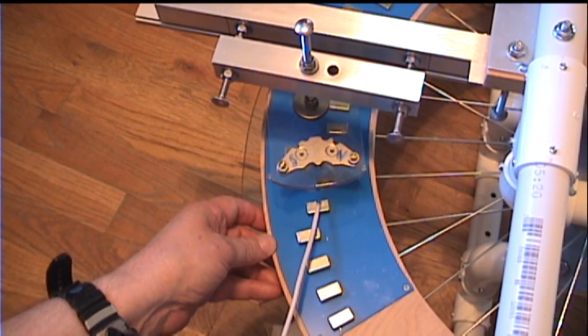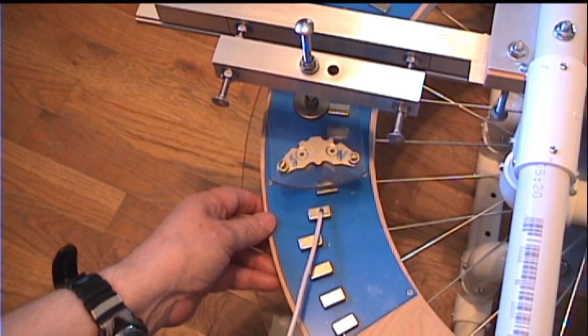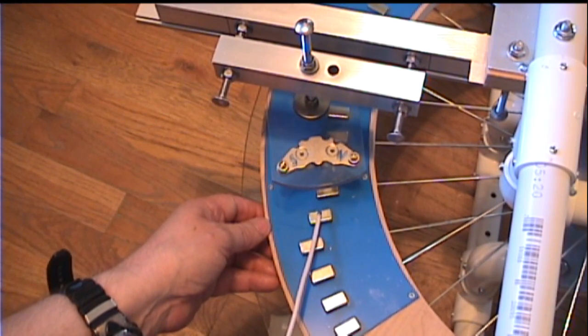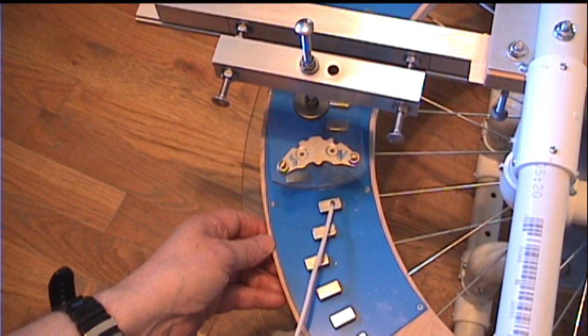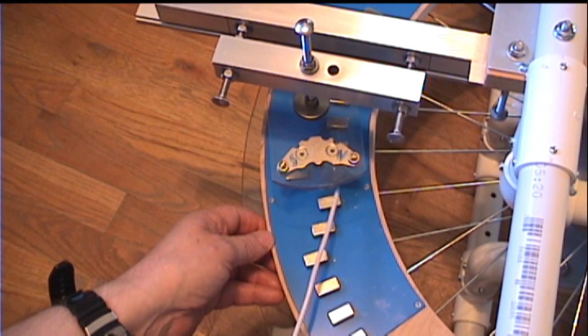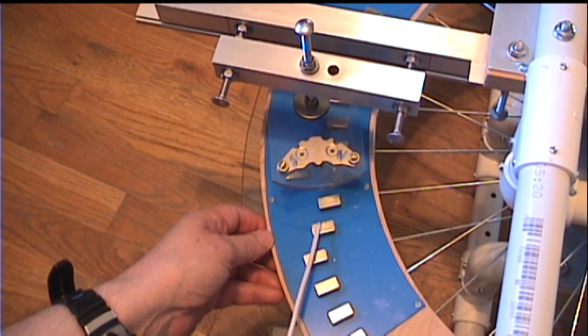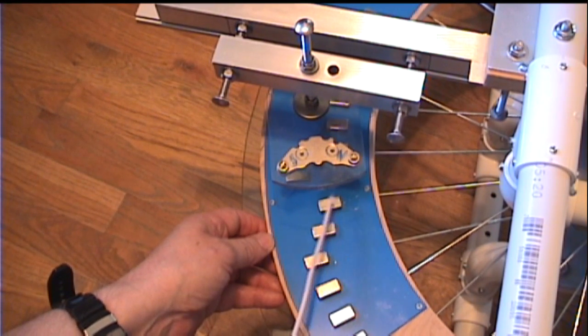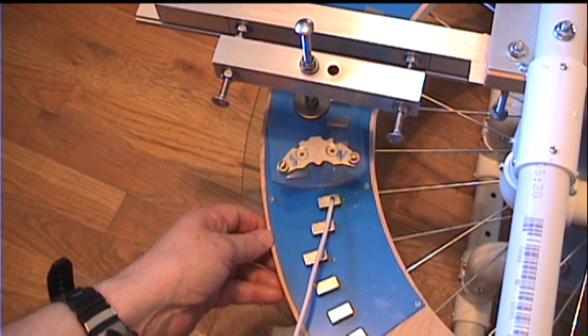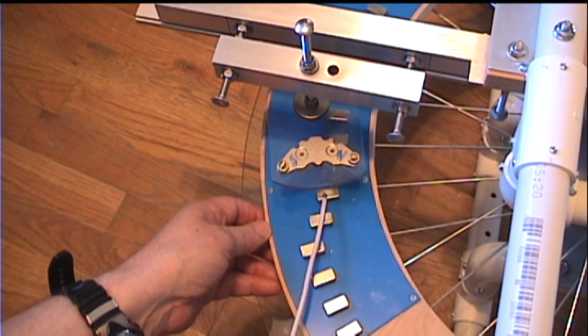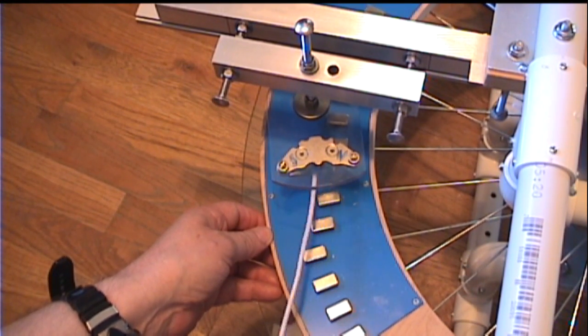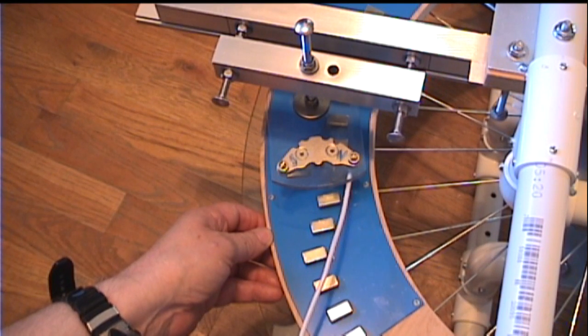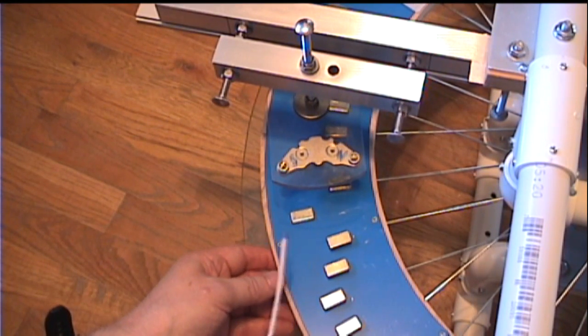This is full attraction and this is reduced attraction to the south pole of the stator. Now when I get to this point, I've reversed the polarity. So instead of having a north facing up magnet, I'm using a south facing magnet, and this one is in a reduced attraction mode.